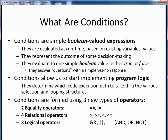No call-me-maybe, no 50 shades of gray. Conditions let us start implementing logic in our programs. They let us determine, at runtime and based upon other data, what path of execution our code is going to take through the various selection and looping structures. We express conditions using three new types of Java conditional operators, which are just special symbols in the language which perform comparisons between other data.